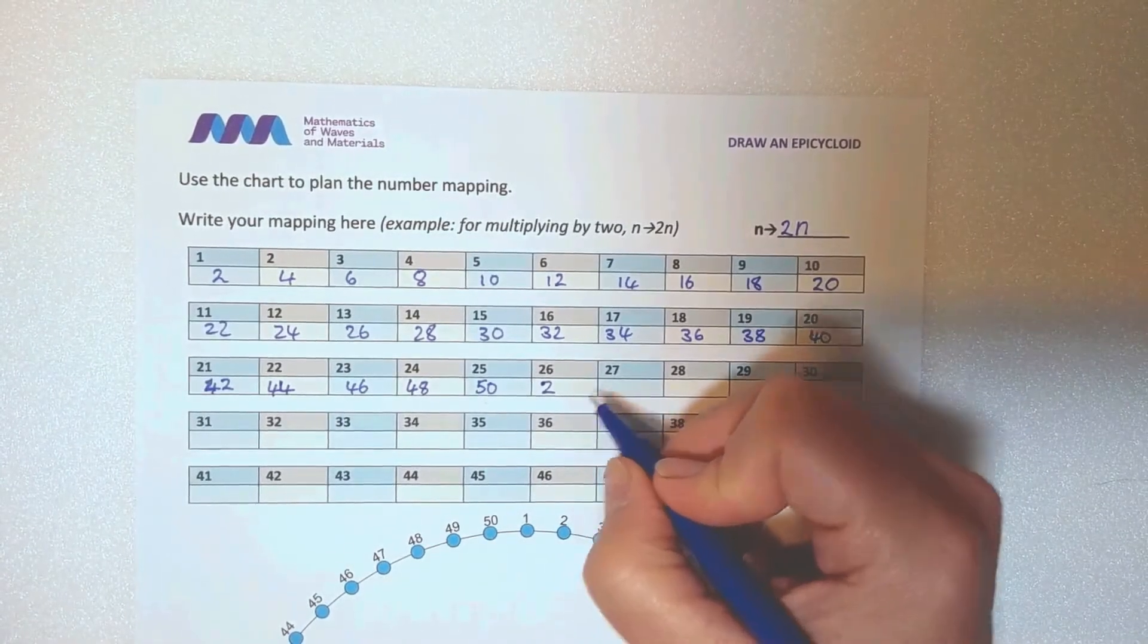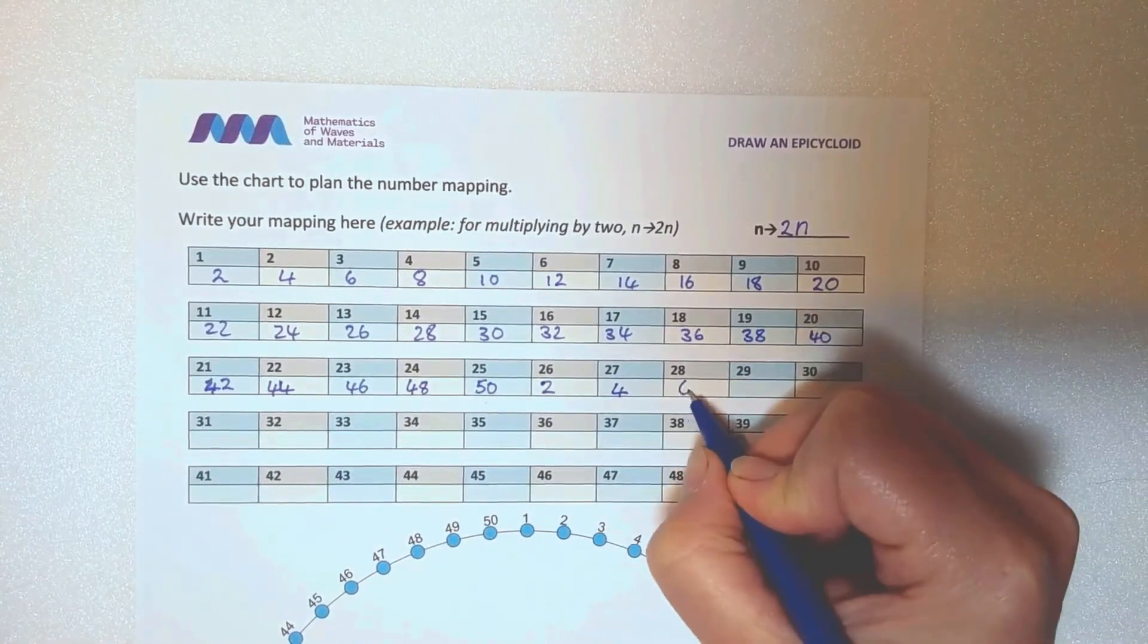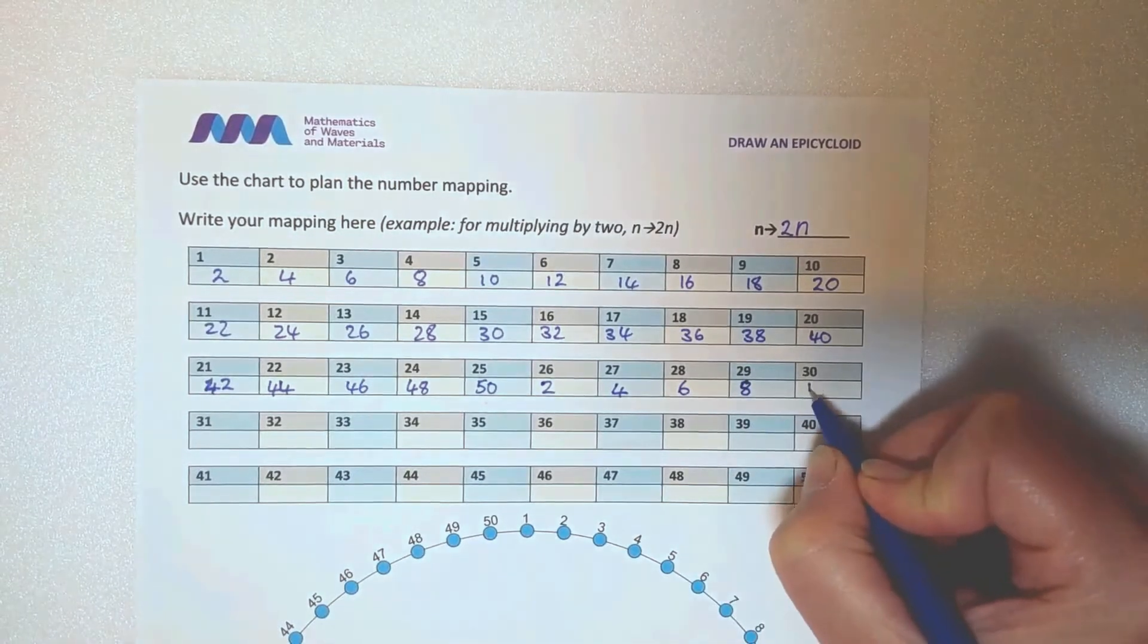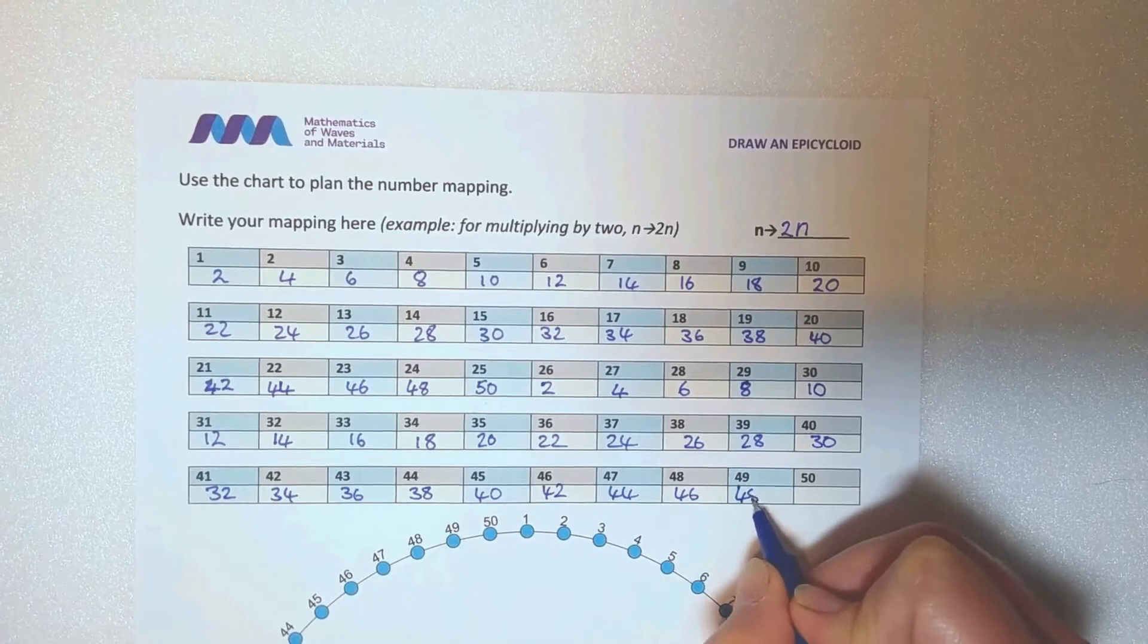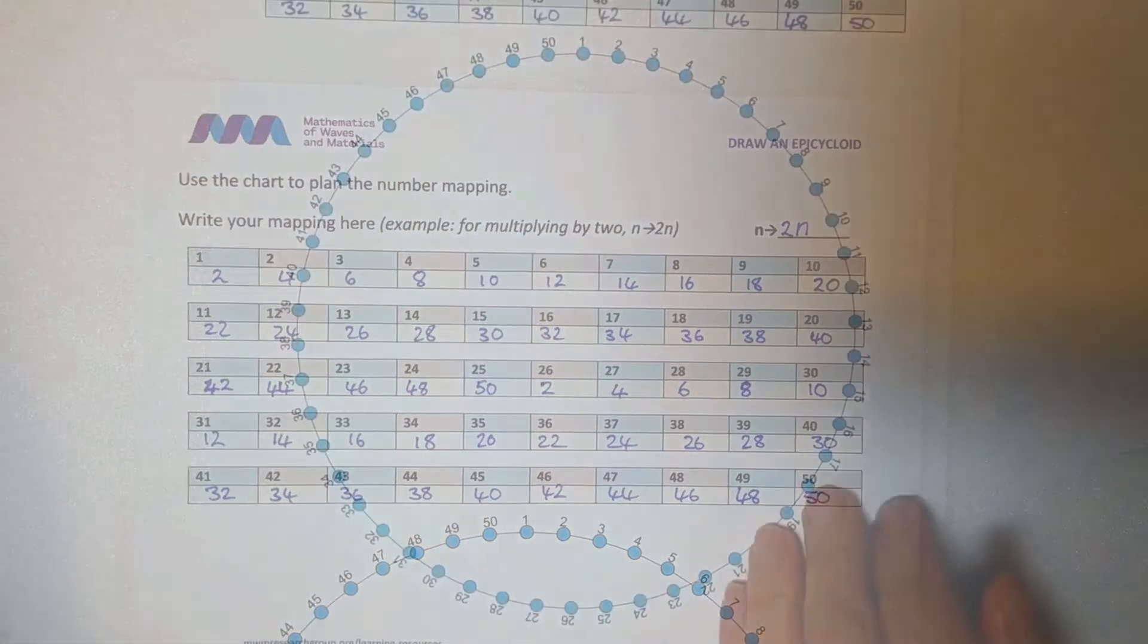When you get to point 26, which maps to 52, subtract 50 from the number you need. Point 2 now represents 52. Point 10 is now point 60. This is called modular arithmetic.